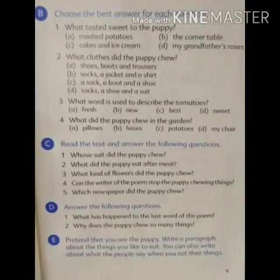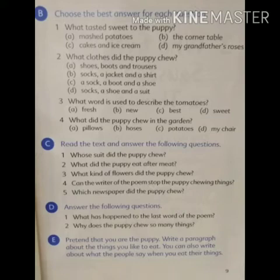First question is: what tasted sweet to the puppy? Puppy को कौन सा ज़ायका मीठा लगा? Options: A. Mashed potatoes — कुचले हुए आलू, B. The corner table — मेज़ का कोना, C. Cakes and ice cream, D. My grandfather's roses. The correct answer is B, the corner table — मेज़ का कोना.